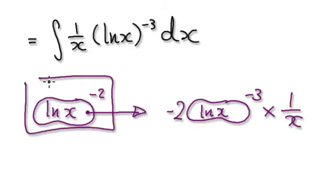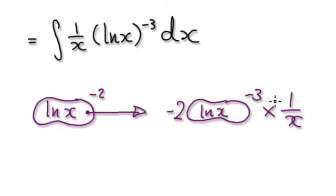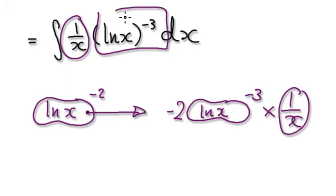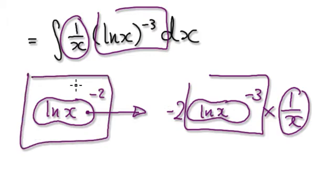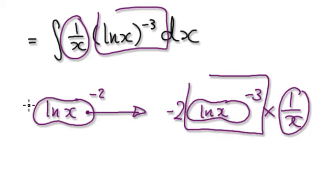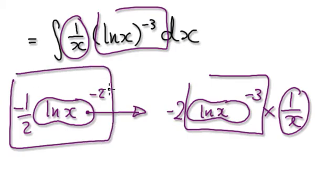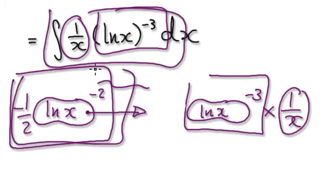So if you make this to be your initial guess and differentiate it, it will give you this whole thing here. Notice that this is exactly the same as this — so all you need to do is negate the negative two. Looking back at your initial guess, make the adjustment of negative a half. Now if you differentiate this, it gives you this whole thing without the negative two. So when you integrate this, the answer would be this.